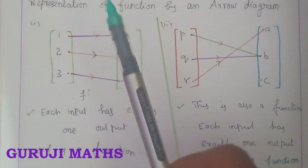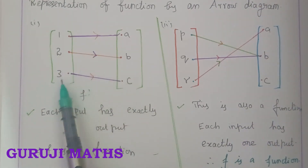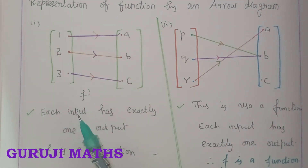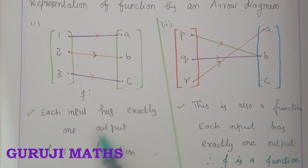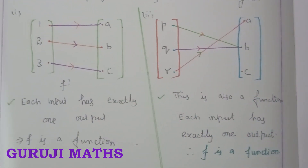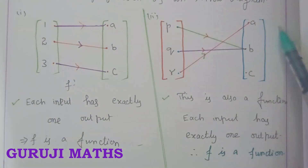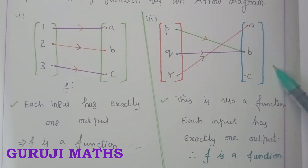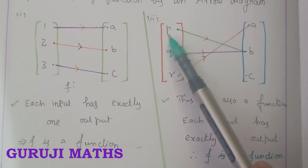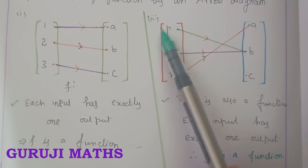This is a function. Each input has exactly one output, so f is a function. Now we have another diagram which is also a function — each input maps to one output.